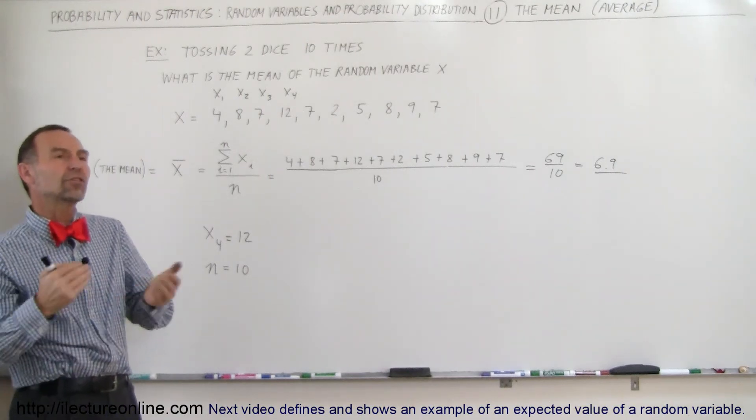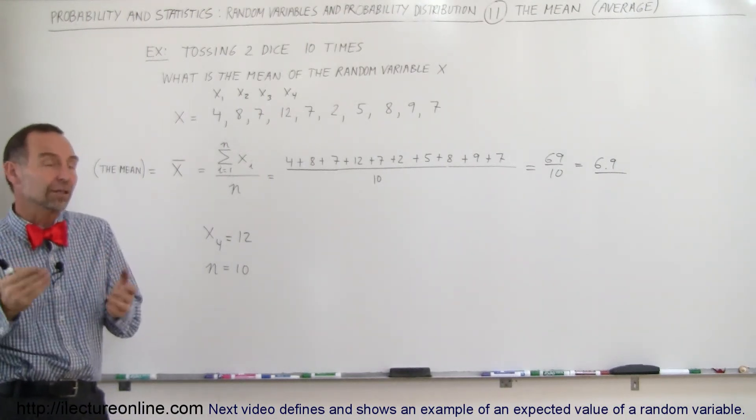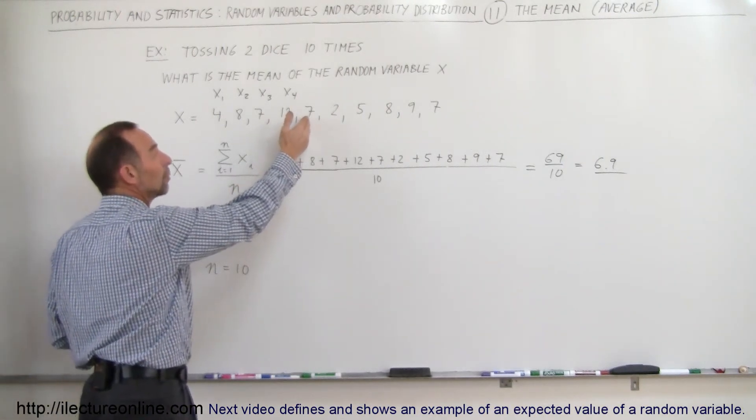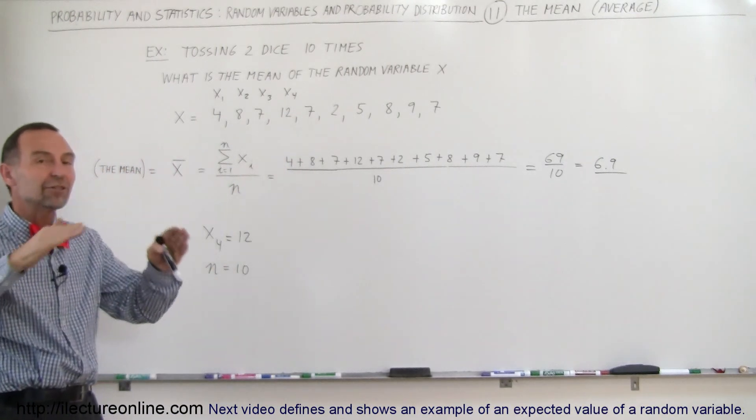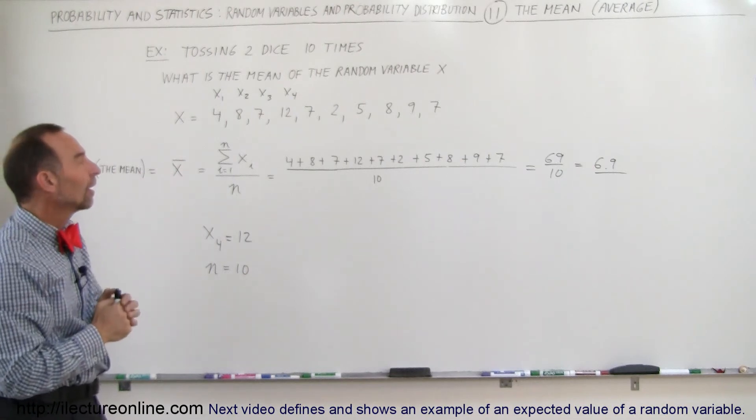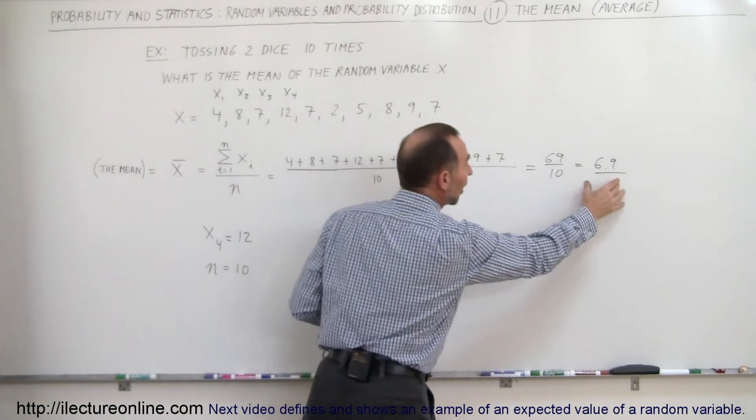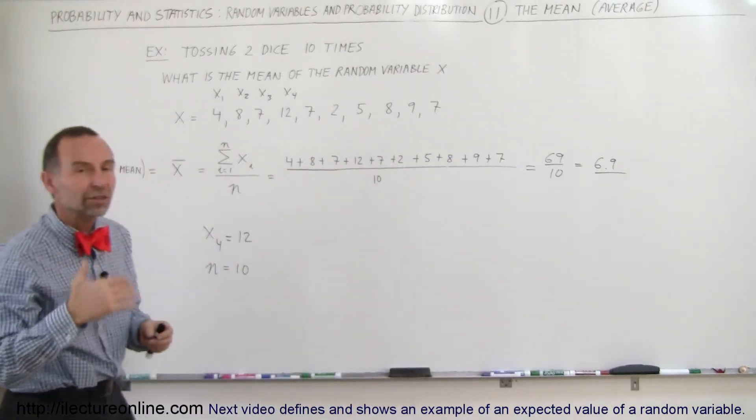So what's the average value that you would expect if you did it a thousand times or a million times? Well, the most prominent number that will appear would be the number 7, since there's an even distribution on both sides in the probability distribution. You'd expect the number to be 7 if you toss it enough times, but if you only toss it 10 times or less,